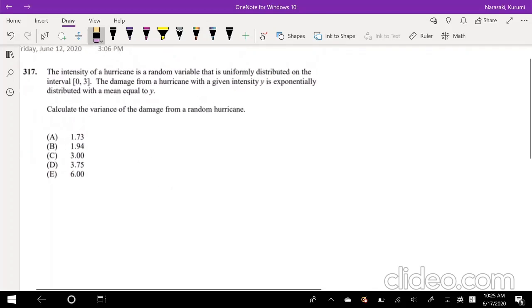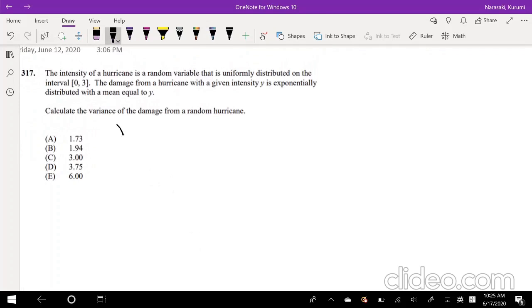Well this is obviously multivariate because we have two variables. I'm going to assign variable Y to the intensity and variable X to our damages. So what is the intensity? This is uniformly distributed on 0 to 3. And X, so the f of x given y is exponentially distributed. So that's with mean equal to y. So that's 1 over y, e to the negative t over y.